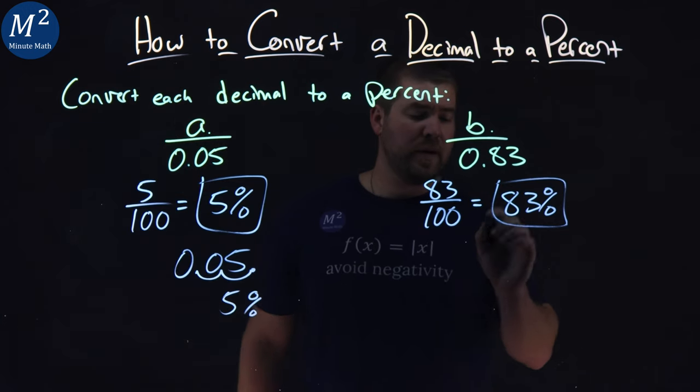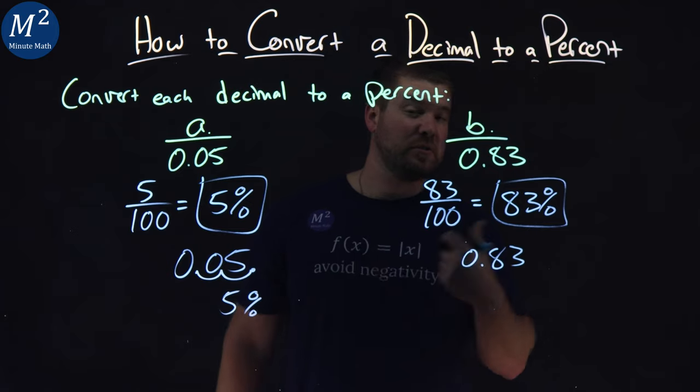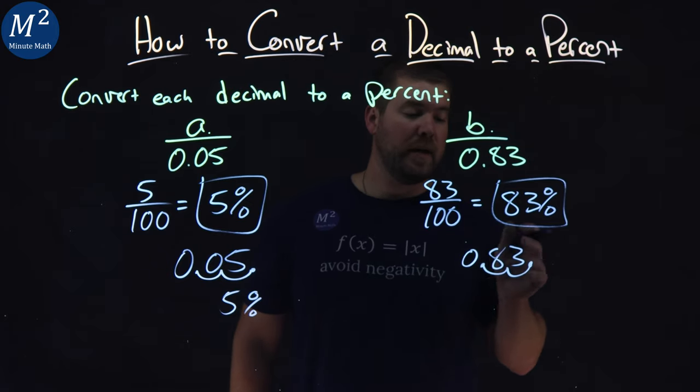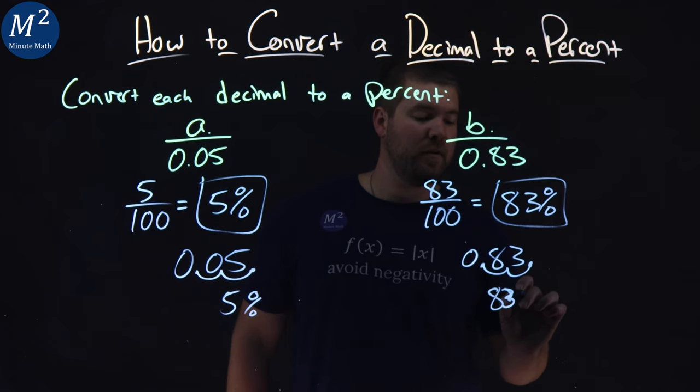Same thing with 0.83. Move the decimal two spots to the right. 1, 2. Goes right here. 0.83 becomes an 83%. If I can write the 3%.